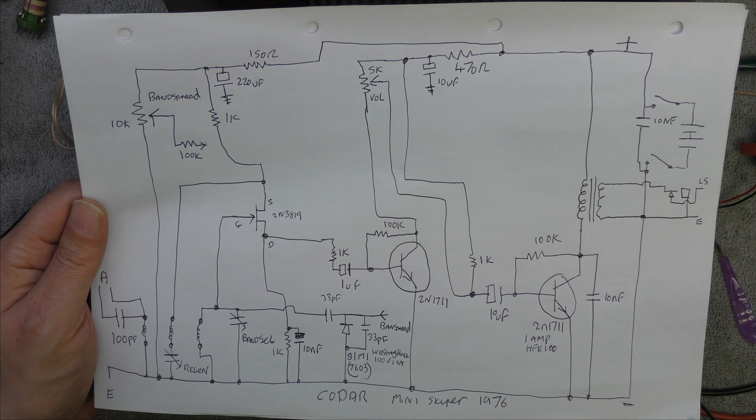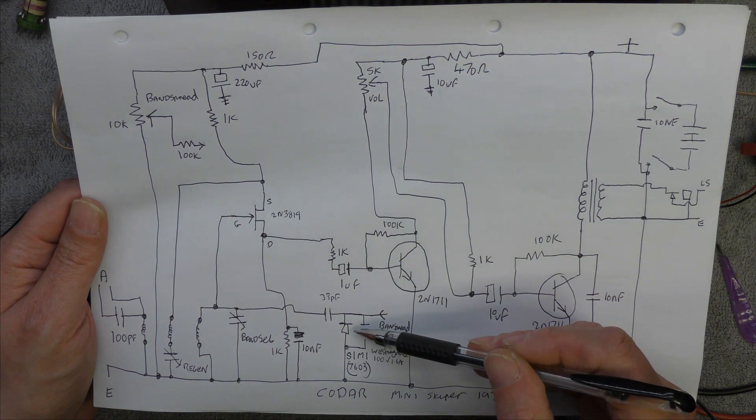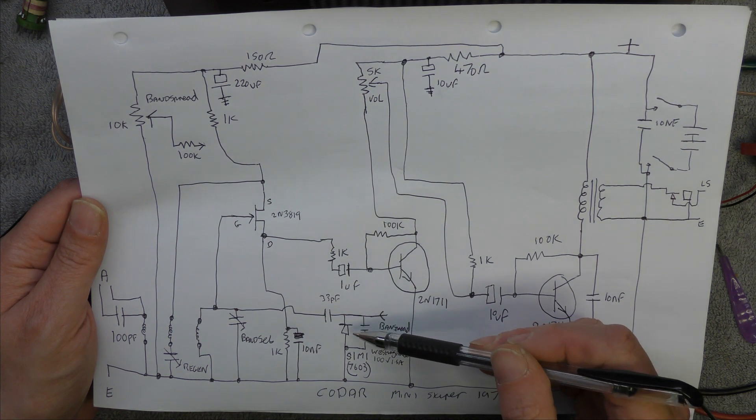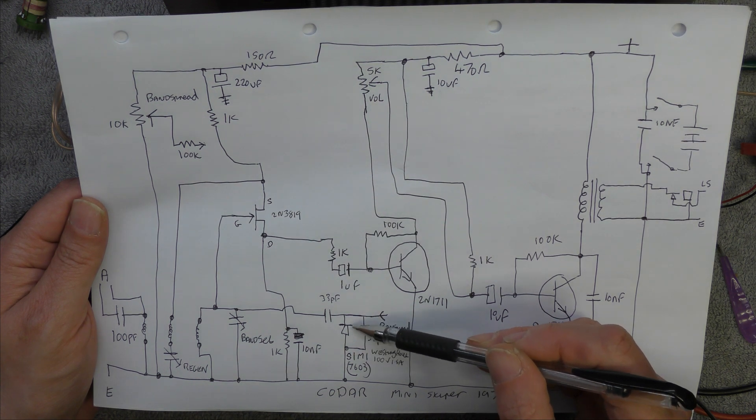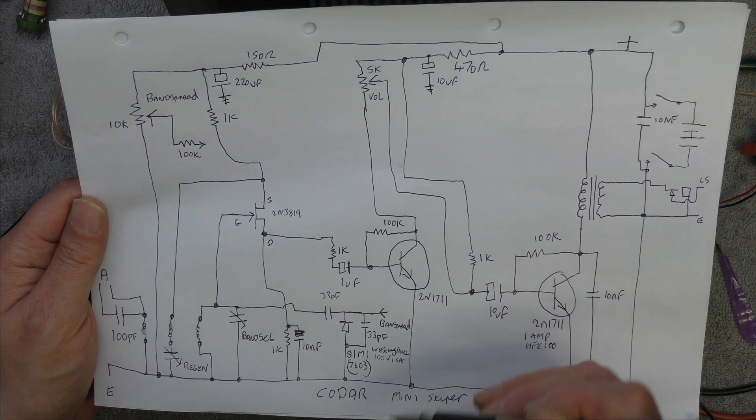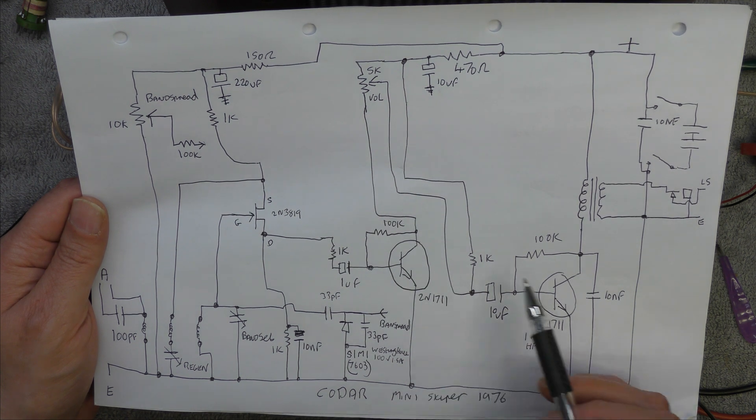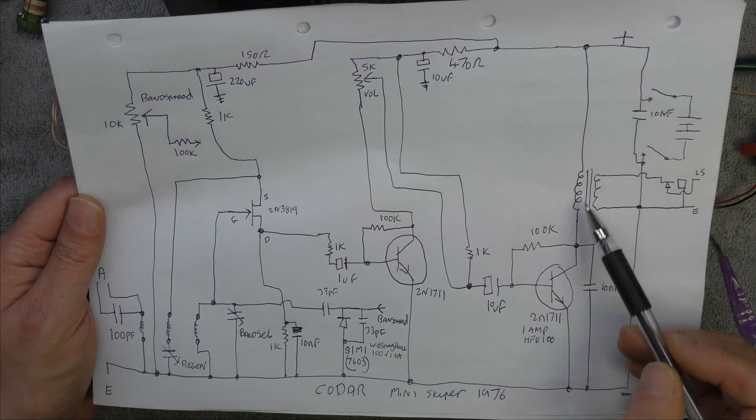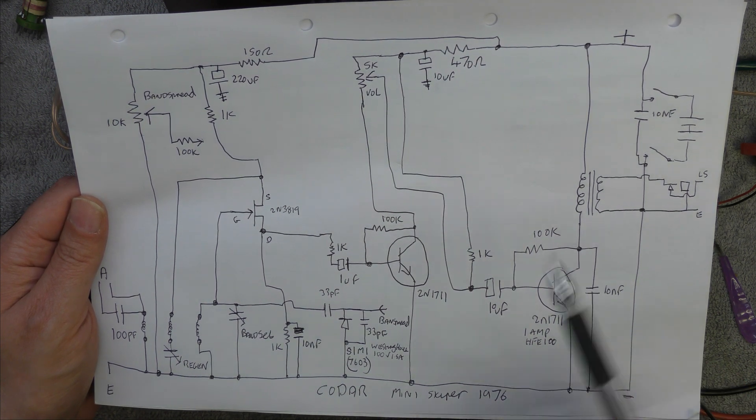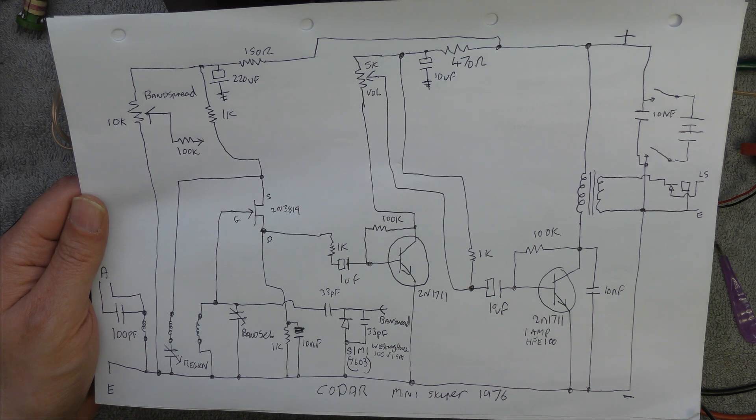The only problem with a circuit like this is there may be a certain amount of the oscillation coupling back out the aerial, so effectively you've got a transmitter. The band spread uses the effect that all diodes change capacitance to a certain extent as the reverse voltage across them is increased or decreased. Rather than pay for a varicap diode, it's just a normal silicon diode. This output stage is quite small - you've just got two transistors in class A driving an output transformer, so it's only going to be tens of milliwatts. It's drawn about 40 milliamps, so most of that's going to be in this transistor.